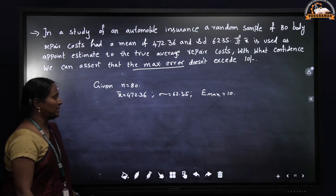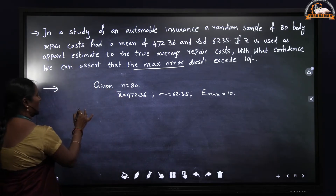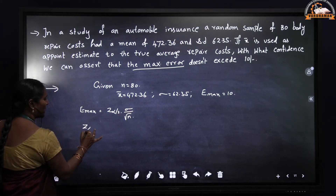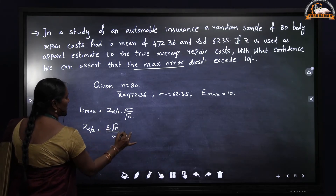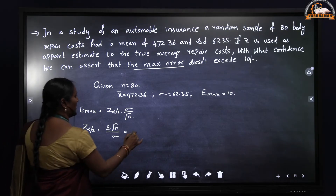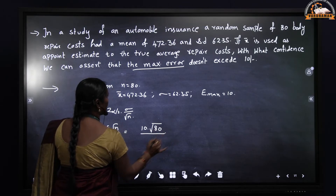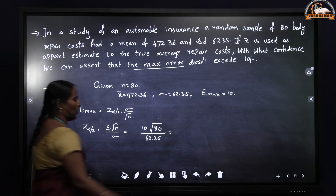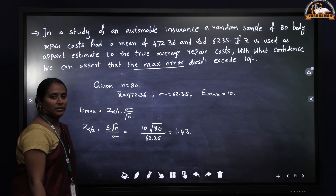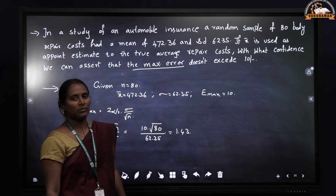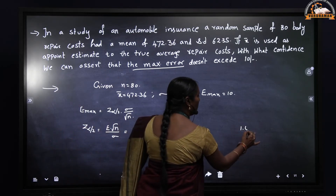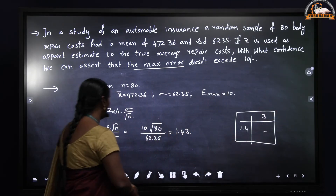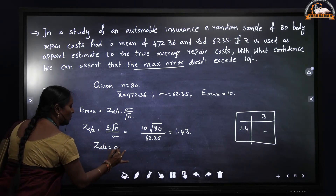Using the formula z_alpha/2 = E_max * sqrt(n) / sigma, we substitute: z_alpha/2 = 10 * sqrt(80) / 62.35, giving z_alpha/2 = 1.43. Looking up 1.43 in the normal distribution table — value at 1.4 corresponding to 3 — we get 0.4236.